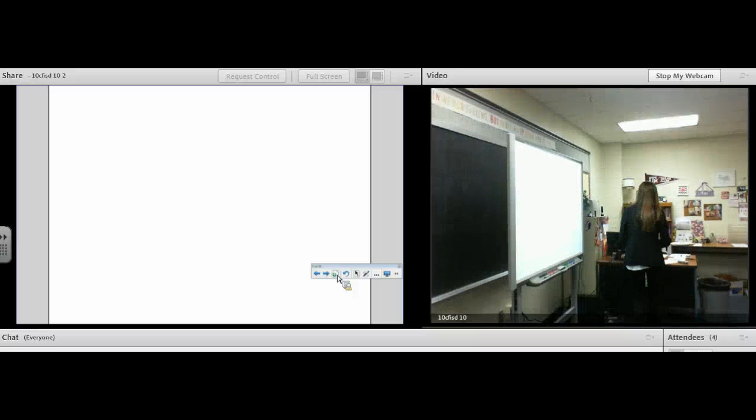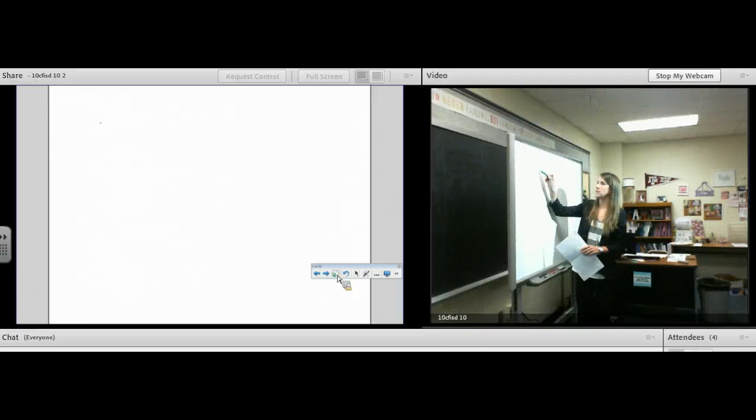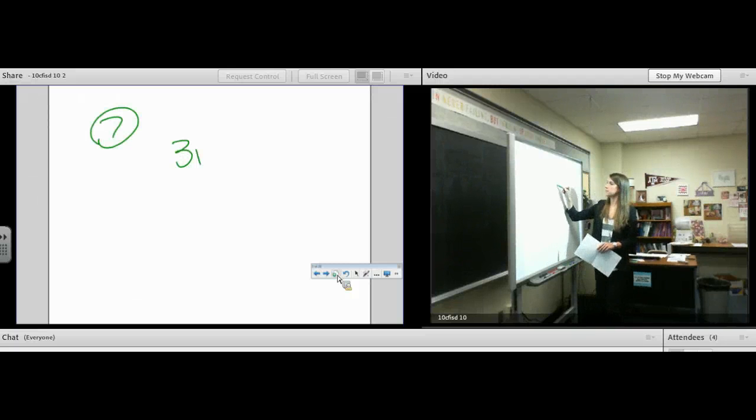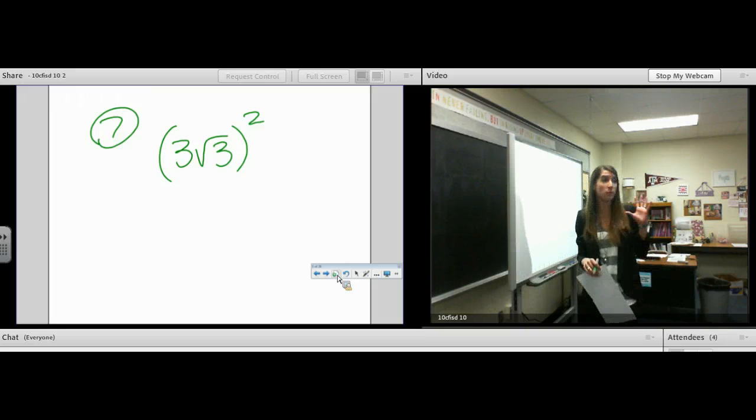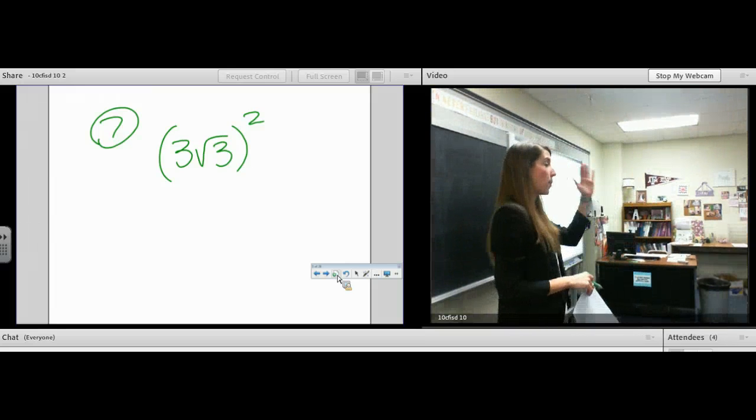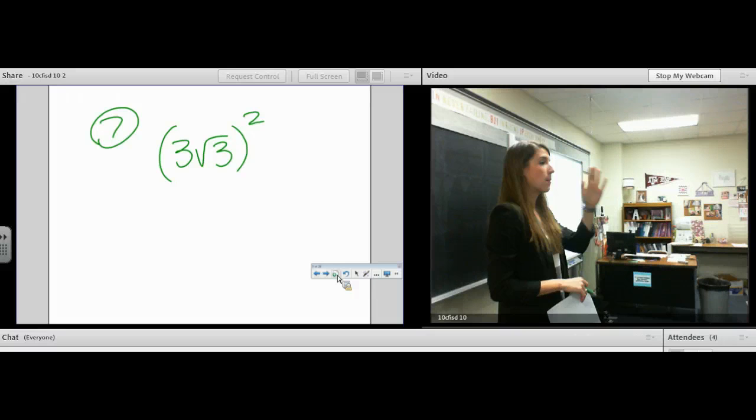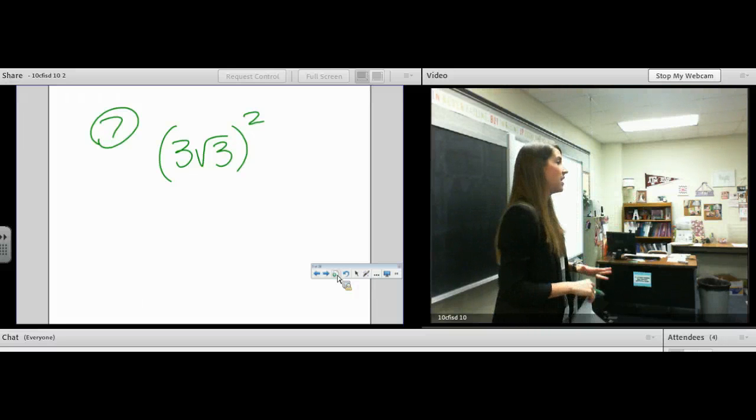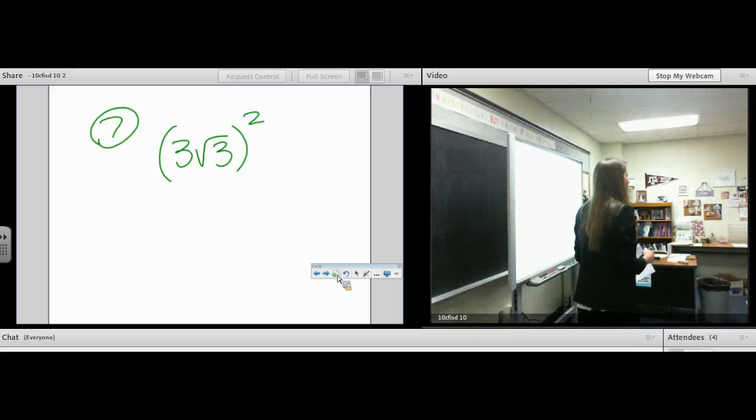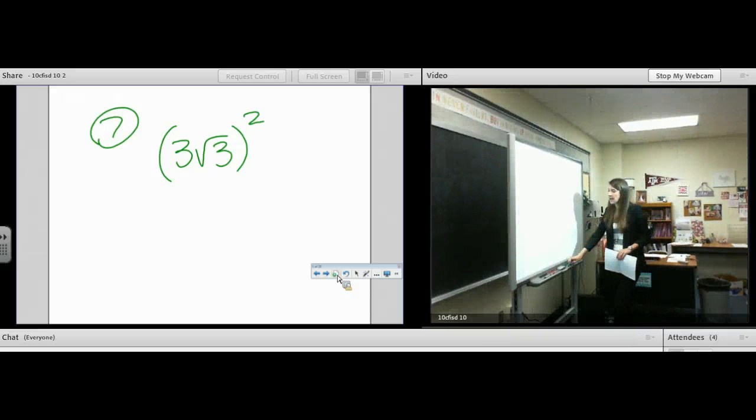Okay, starting with number 7: 3√3 squared. You have two choices. Number 1, you can go straight to your calculator. And I'm not even talking about the y equals trick I showed you. I'm talking about the home screen, opening a parenthesis, putting 3√3, closing all of your parenthesis, and then squaring it. It will give you the answer. But by hand is always better. So let's do it by hand.